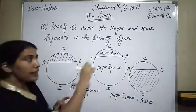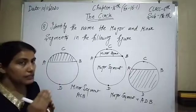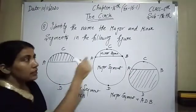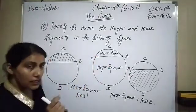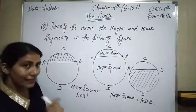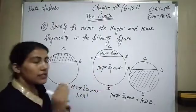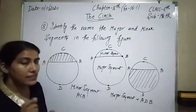When a line segment divides the circle into two parts, the smaller region is called the minor segment and the bigger region is called the major segment.